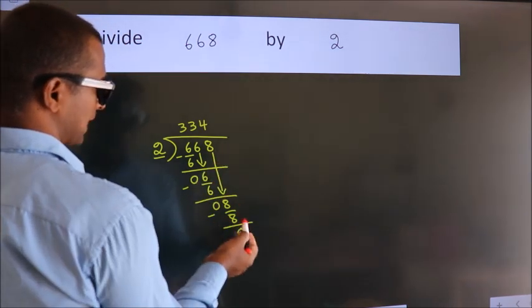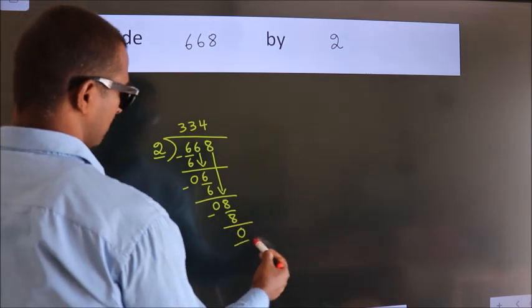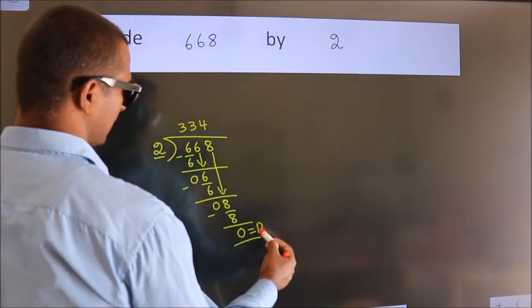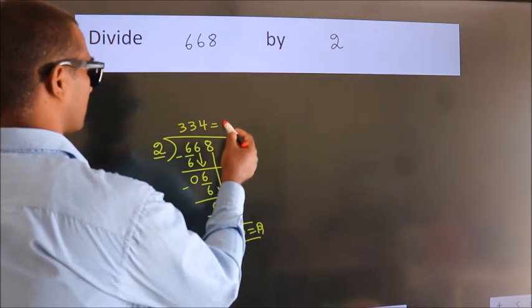No more numbers to bring it down. So we stop here. This is our remainder. This is our quotient.